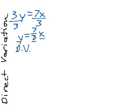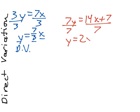Now, take another equation, 7y equals 14x plus 7, divide both sides by 7, so we have y equals 2x plus 1. This is not direct variation, and the problem is that 1 on the end. It's going to give us a starting point other than the origin.